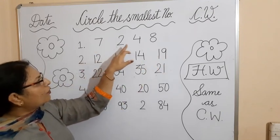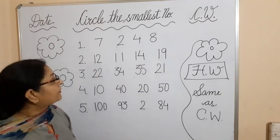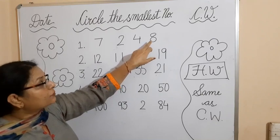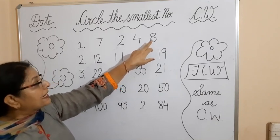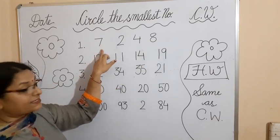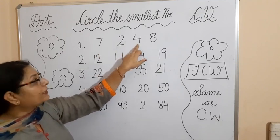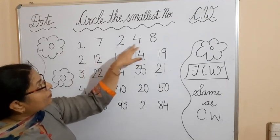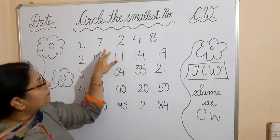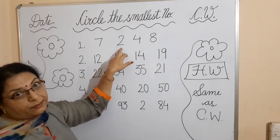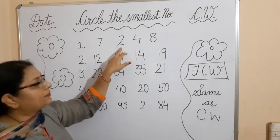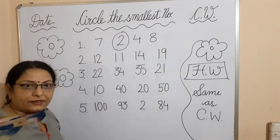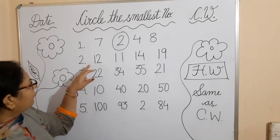So we have 7, 2, 4, and 8. Which number comes last? 8 is the last number, so 8 is the biggest number. 8 is greater than 7, greater than 4, and greater than 2. Now find the smallest number — 2 is the smallest because 2 comes first. So we have to circle the 2. Did you understand?